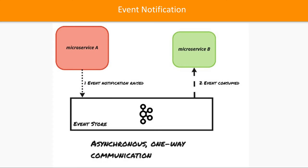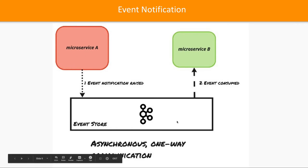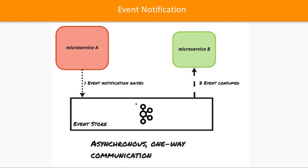Now, how do these notifications happen? There should always be one producer and one consumer. One service raises the event and sends that message to the event store — some particular queue system. This is asynchronous one-way communication. For example, a mail notification service: one microservice does some random task and raises an event. That raised event goes one way from that microservice to an event notification microservice. These two microservices are not directly talking to each other — they are producer and consumer services.